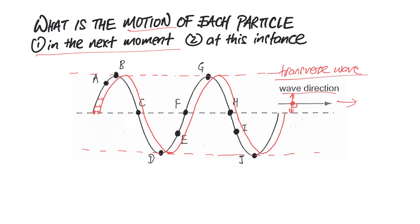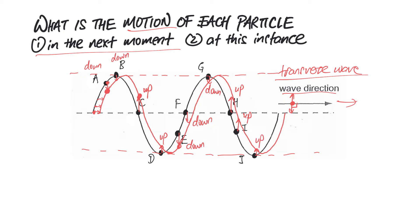All particles are like coconuts floating on the water — they must stay on the wave and can only move vertically. So in the next moment: A is going down; B is going down (it was at the crest, so it must come down); C is going up; D is going up (it was at the trough); E is going down; F is going down; G is going down; H is going up; I is going up; and J is going up.